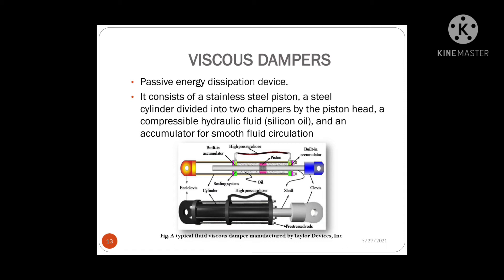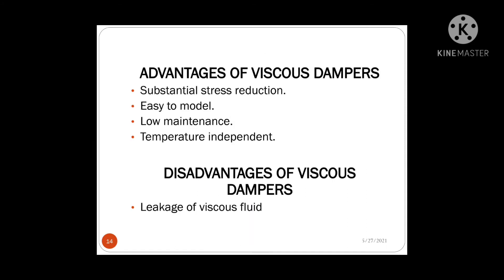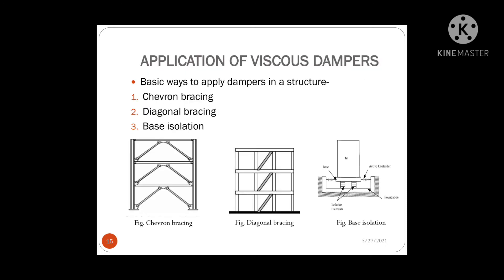The advantages of viscous dampers are that they lower both stress and deflection throughout the structure, allowing it to remain elastic. They can be easily modeled using code, have very low maintenance, and are unaffected by weather. The disadvantages include some rarely observed leakages in the fluid section. Dampers can be applied to buildings in three basic ways: chevron bracing, diagonal bracing, and base isolation, as illustrated in the images on the slide.